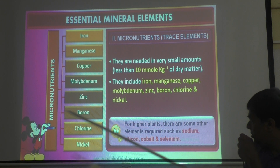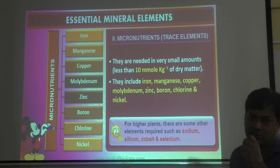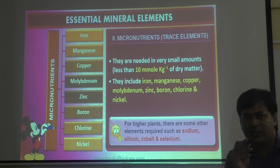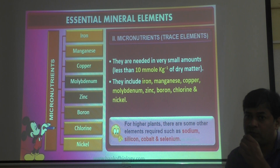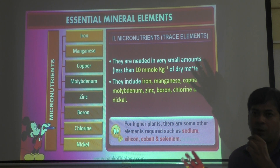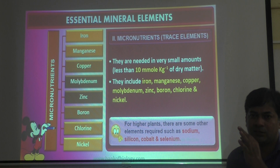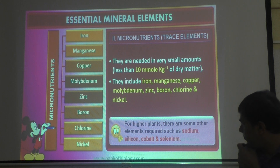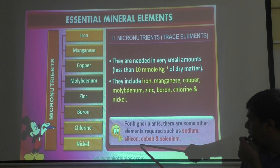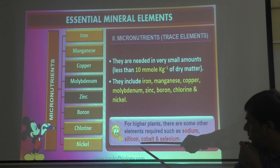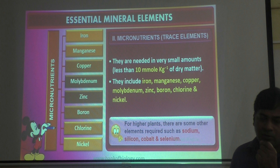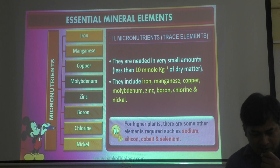There are some exception cases. For higher plants — angiospermic plants, large trees — only 17 elements are not enough. Some higher plants require 4 extra minerals, so 17 plus 4 equals 21 elements. But these 4 elements are not compulsory for all plants — they are optional. Those four are sodium, silicon, cobalt, and selenium.